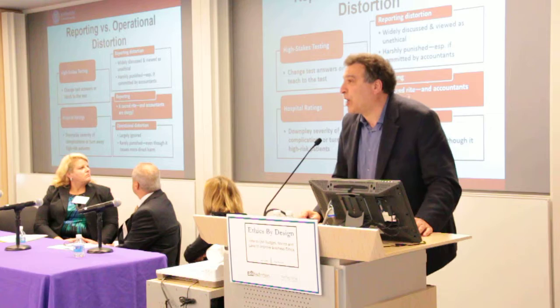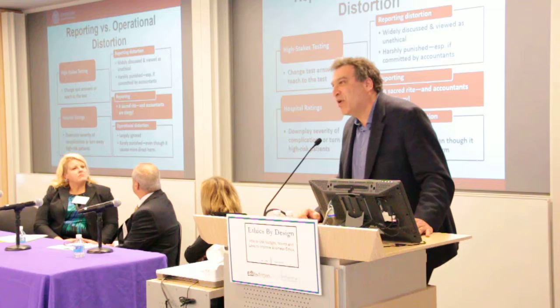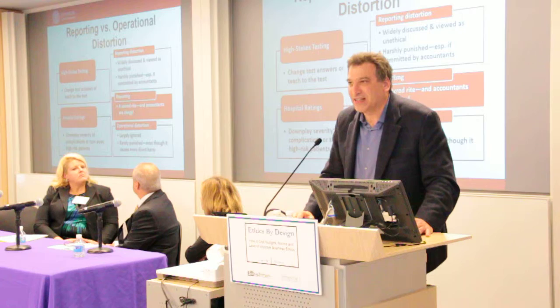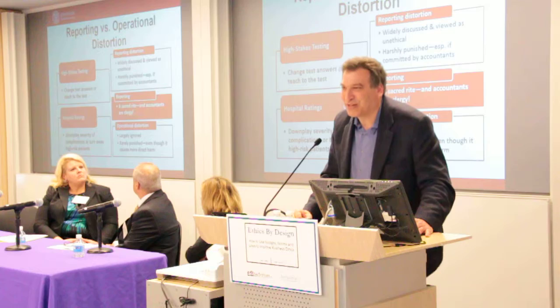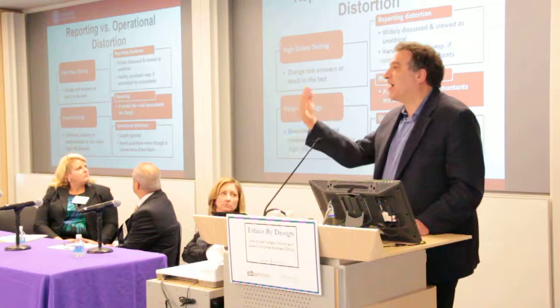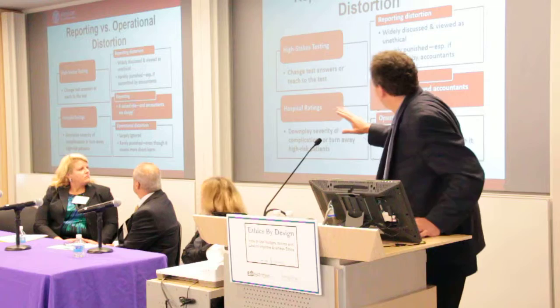It's very popular to have public ratings of hospitals. So what do hospitals do? They generate a lot of the reports that are the input to the ratings. So if there's a serious complication, they call it moderate. And if it's moderate, they call it mild. Or they simply turn away people who are high risk of complication.